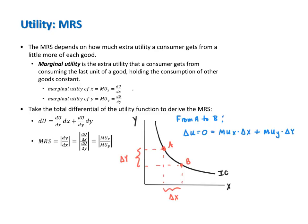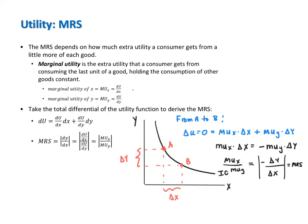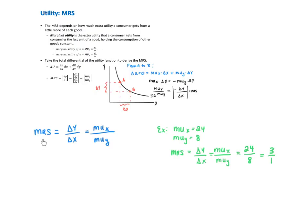Taking this equation, we can algebraically solve for delta y over delta x. MUx times delta x equals the negative of MUy times delta y. Therefore, minus delta y over delta x equals MUx over MUy. The negative of the slope — rise over run — of an indifference curve equals the ratio of marginal utilities. For simplicity, we define the MRS as the absolute value of the slope. Notice how the MRS is both the change in y divided by the change in x as well as the ratio of MUx to MUy.